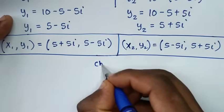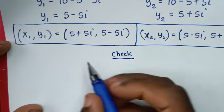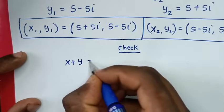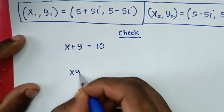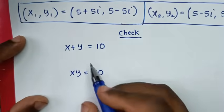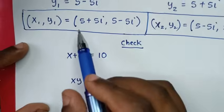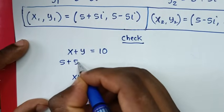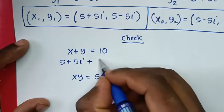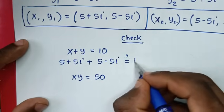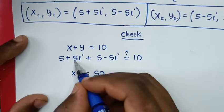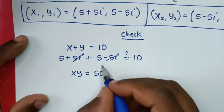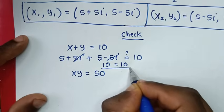Now let's check our answer. We check the first solution using equation 1: x plus y equals 10. Substituting x₁ and y₁: (5 plus 5i) plus (5 minus 5i). The 5i and minus 5i cancel, giving 5 plus 5 equals 10. Left side equals right side, so it is true for the first solution.